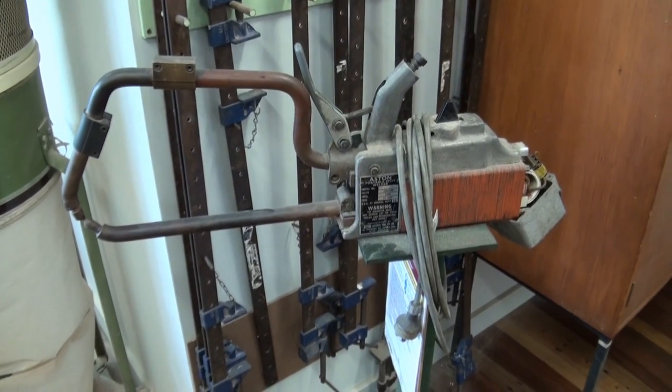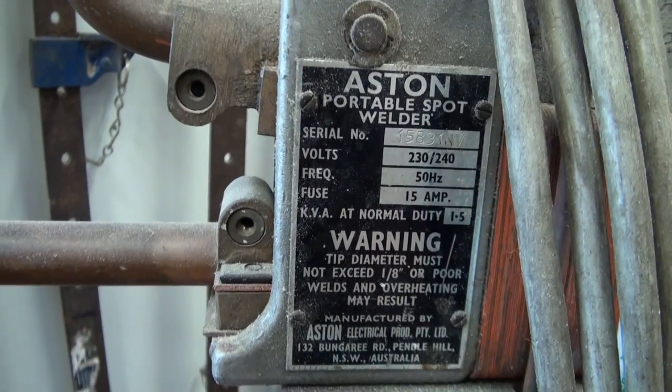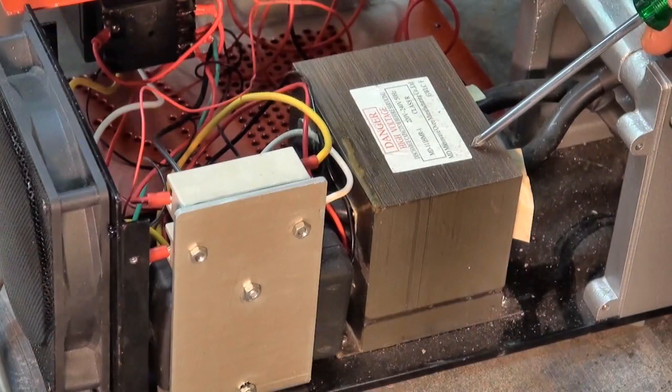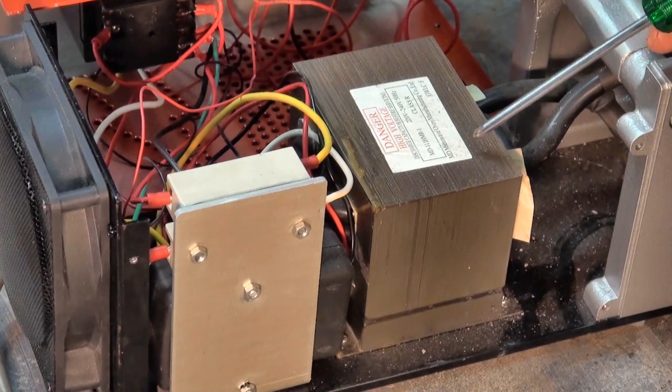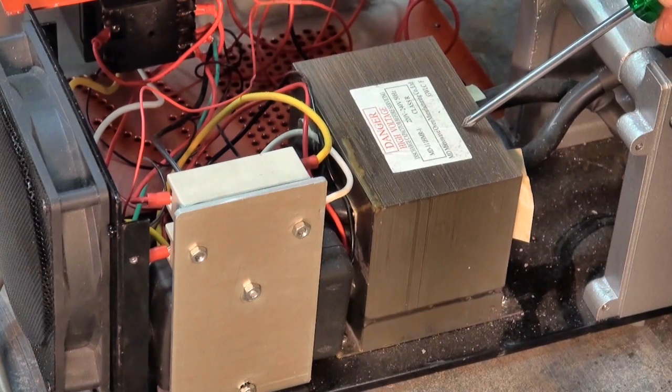I based this design on a commercially made spot welder called an Aston portable spot welder. And it was one that I had used and done some maintenance on. And I went back to that welder and checked out how the transformer on that one was arranged. So, let's take a quick look at that welder and check out the transformer in it.